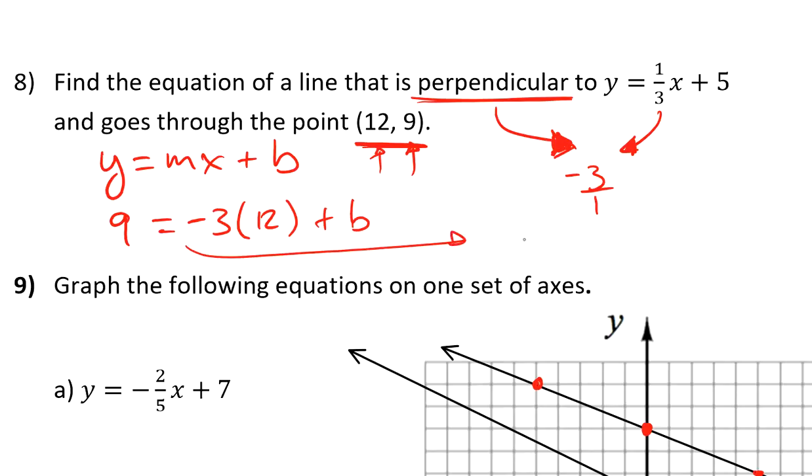So as I look at this, what do I have? I have 9 equals negative 36 plus b.